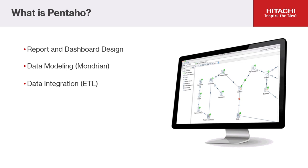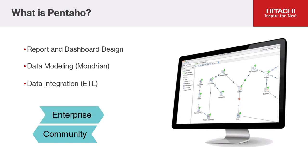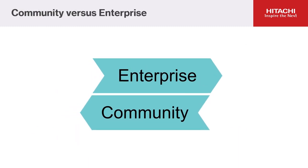It benefits from an open source development model and is available via two types of license: Community Project, which comes with a public open source license and no warranty, and Enterprise Edition, which comes with a commercial license and a vendor warranty. As it is open source, Community Edition license is free. Documentation and support is provided via the online community, and responsibility for maintenance, security and uptime rests with the user.